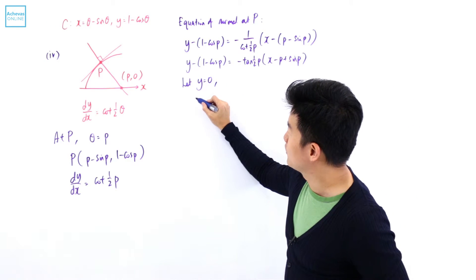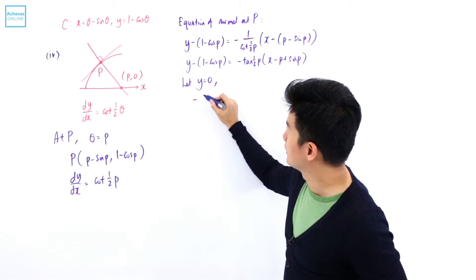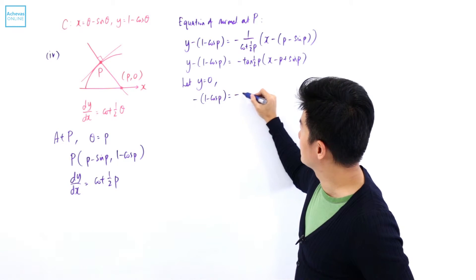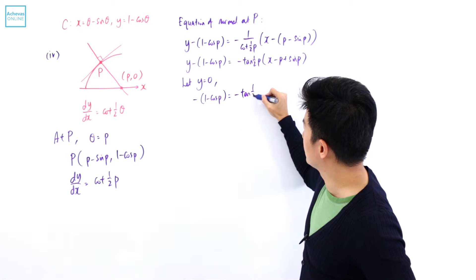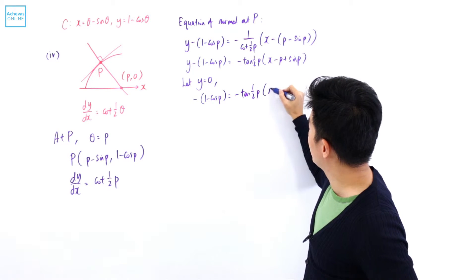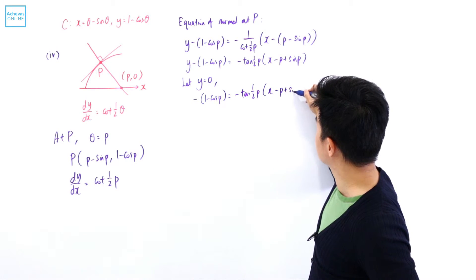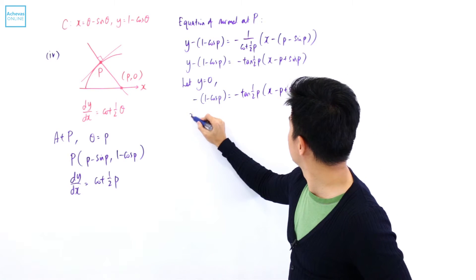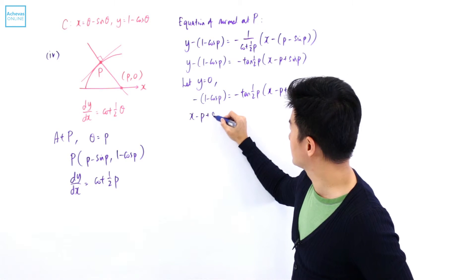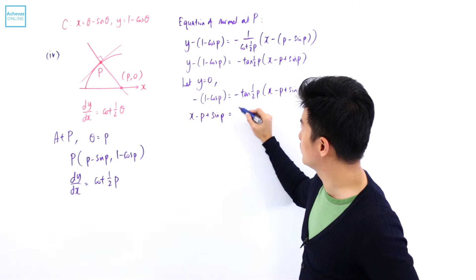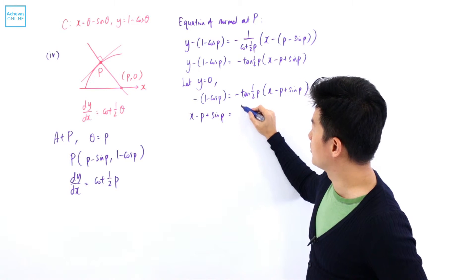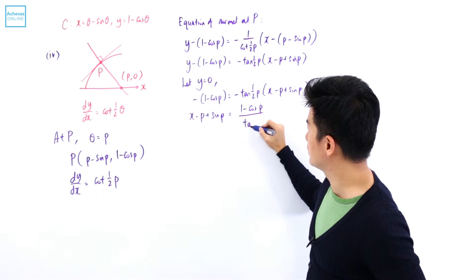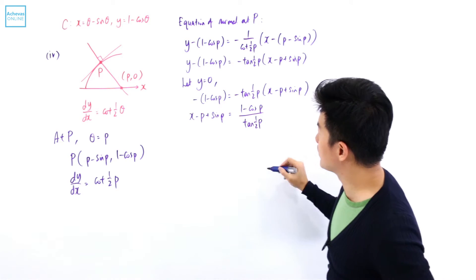Letting y equal 0, we get minus (1 minus cosine P) equals minus tangent of half P times (x minus P plus sine P). Rearranging, x minus P plus sine P equals (1 minus cosine P) divided by tangent of half P.